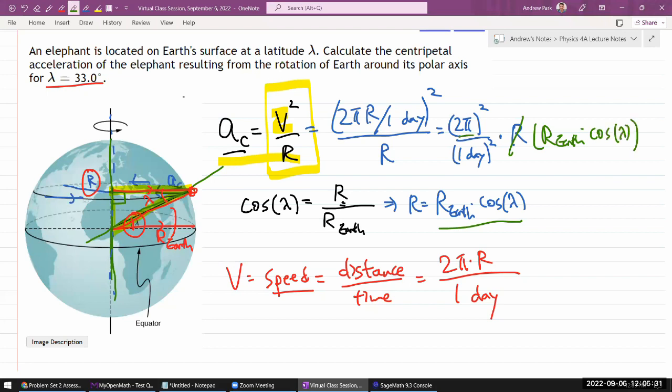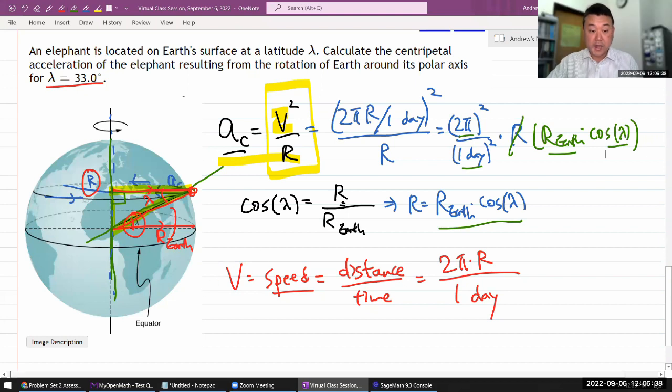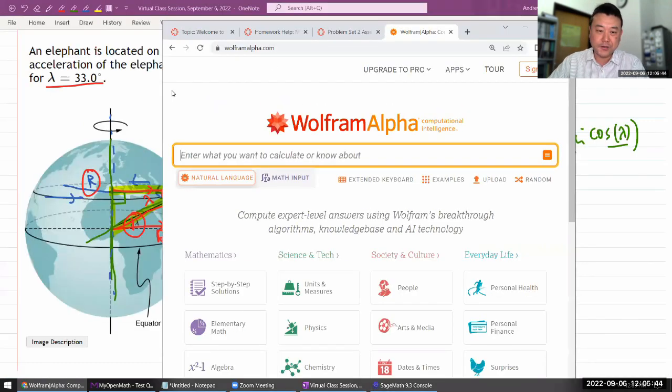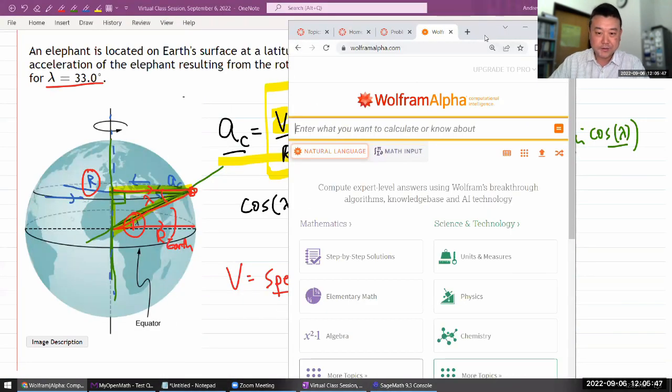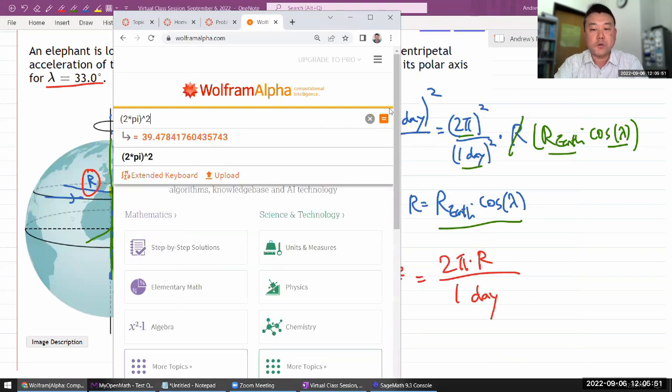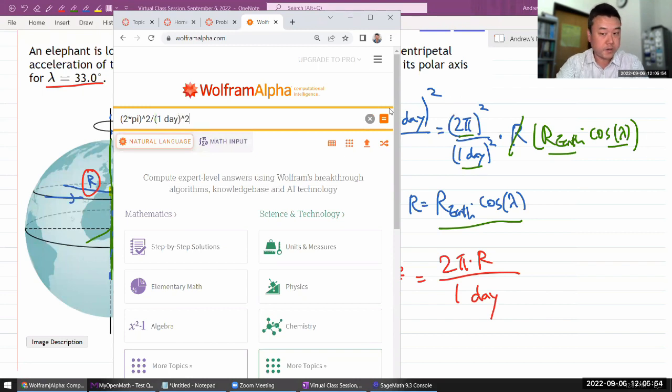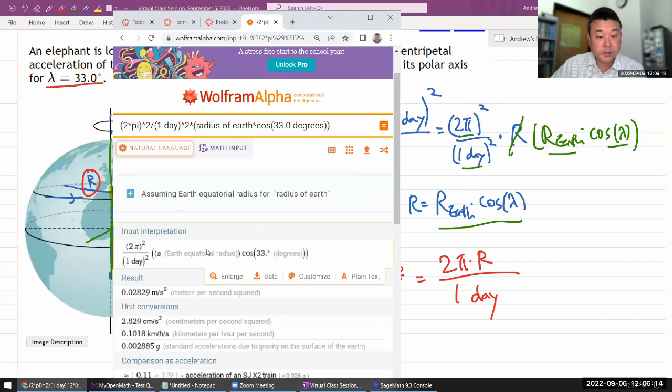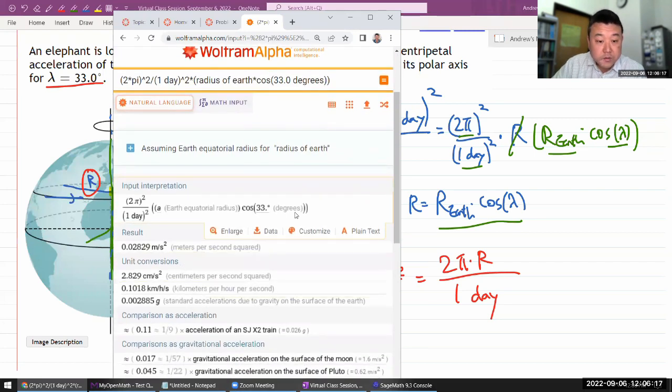Okay, I think I'm all done. All the expressions here are where I can figure out the number and plug in the numbers for. So let me do that. I'm going to do this on Wolfram Alpha because it'll help me avoid doing tedious unit conversion. So let me just plug things in. So I have 2π squared divided by 1 day squared times I think Wolfram Alpha knows radius of Earth. I'm going to just put that as a phrase times cosine of 33.0 degrees. Let's put that in and see if Wolfram Alpha understood it correctly. Okay, Earth equatorial radius, that sounds right.